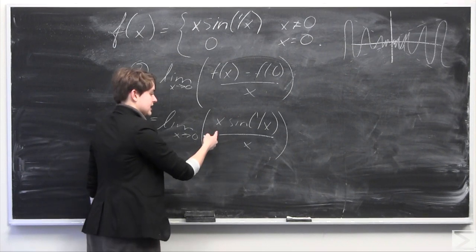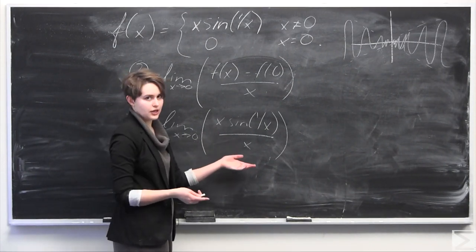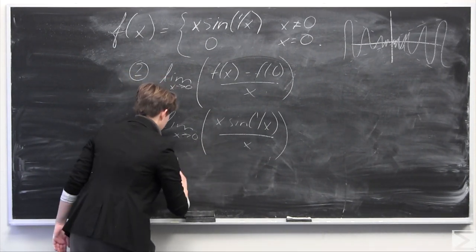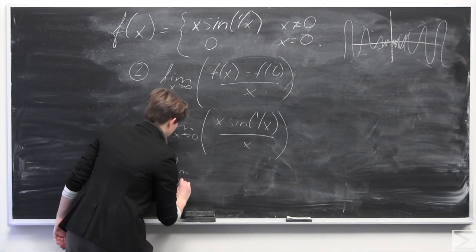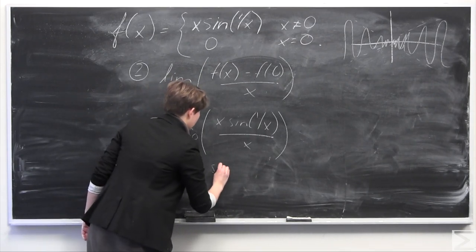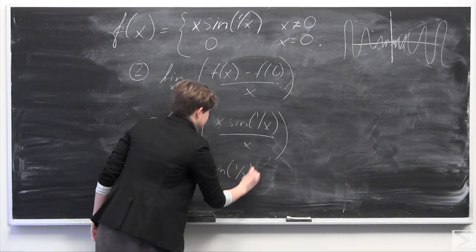So, as you can see, there's an x in the numerator and there's an x in the denominator, so I'm just going to cancel them out. And we're left with the limit as x approaches 0 of the sine of 1 over x.